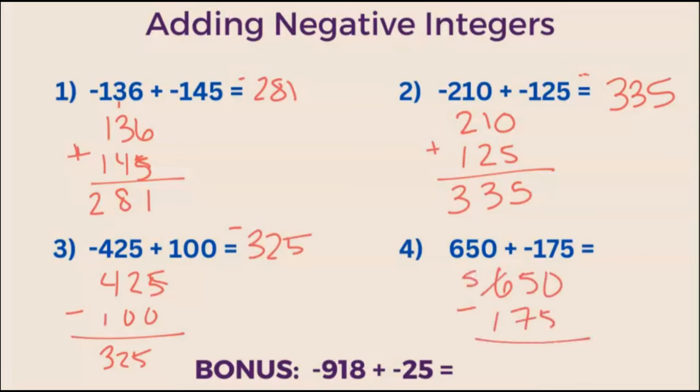We're going to have to go over here and borrow. So 10 minus 5 is 5. 14 minus 7 is 7. And 5 minus 1 is 4. So 475 is the result of that.